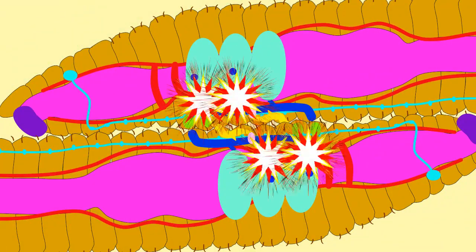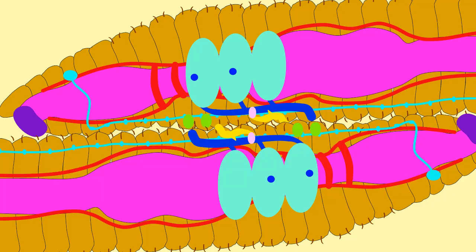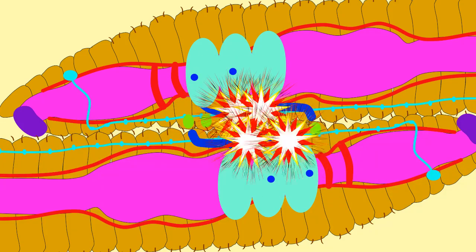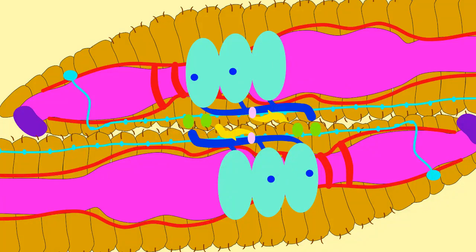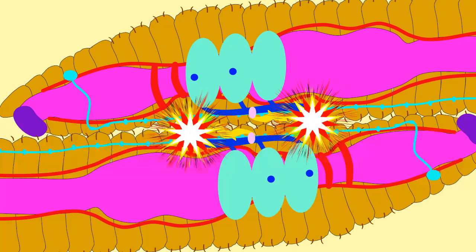The testes produce sperm, which pass from seminal vesicles through male genital pores, which are small openings in the 15th segment of the body.